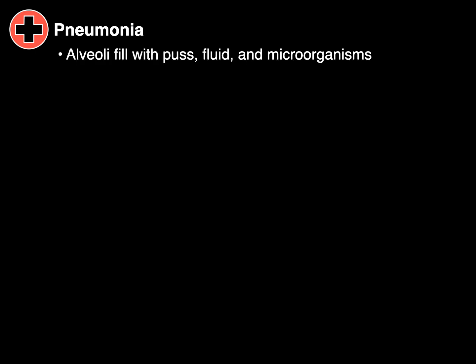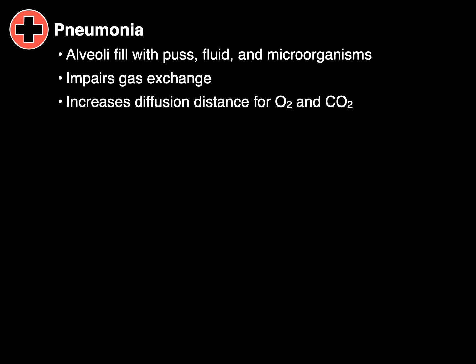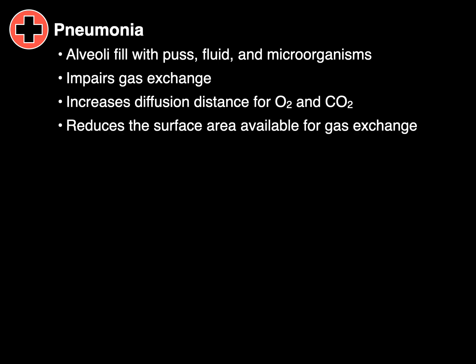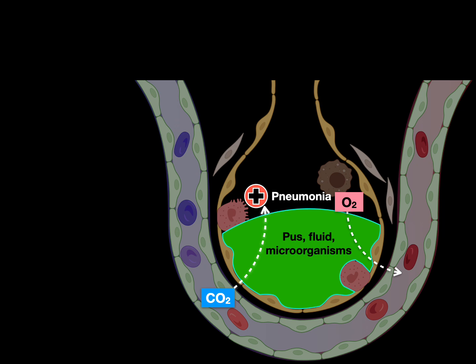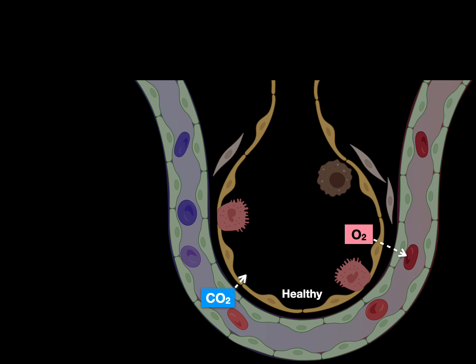What happens when this goes wrong? In pneumonia, the alveoli fill with pus, fluid, and microorganisms. This impairs gas exchange, increases the diffusion distance for oxygen and CO2, and reduces the surface area available for gas exchange. Looking at the illustration: a healthy alveolus versus one filled with pus, fluid, and microorganisms — notice the distance CO2 has to diffuse to get out of the blood, and the distance oxygen must travel to get into the blood.